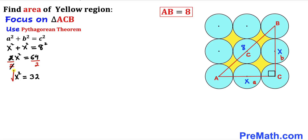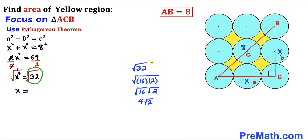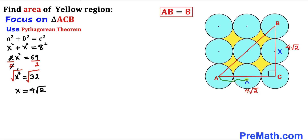Let's undo this square by taking a square root on both sides. The left-hand side gives us x. On the right-hand side, the square root of 32 can be written as the square root of 16 times the square root of 2, and the square root of 16 is 4. So the square root of 32 simplifies to 4 times the square root of 2. Therefore, side lengths AC and BC both equal 4√2.